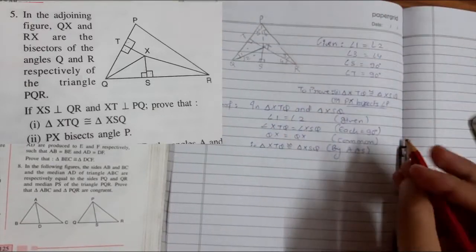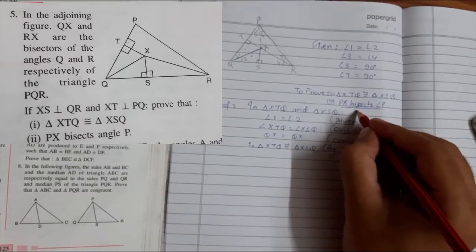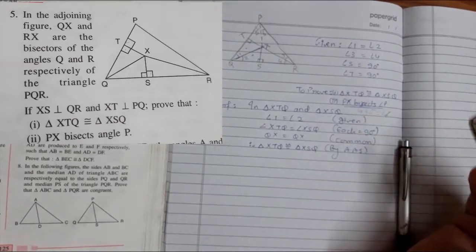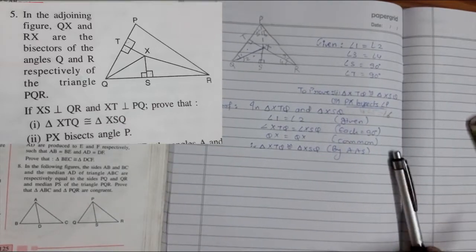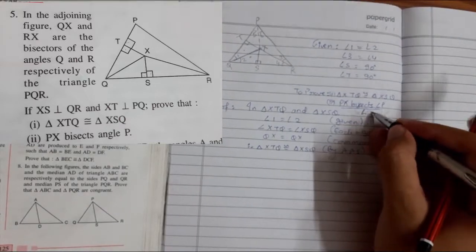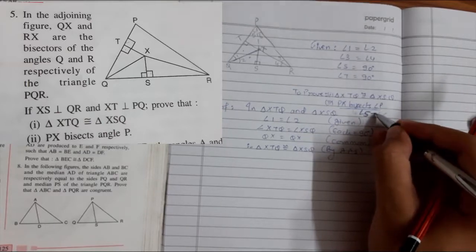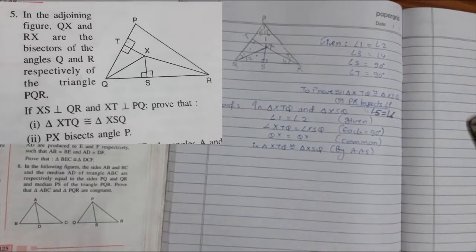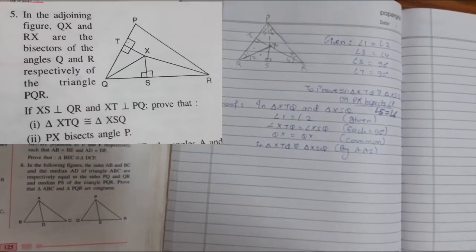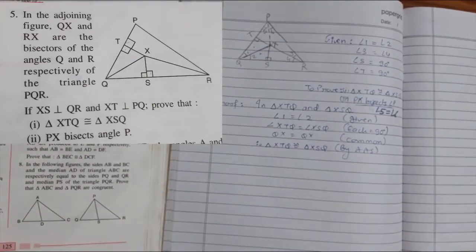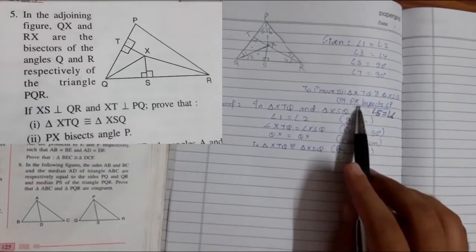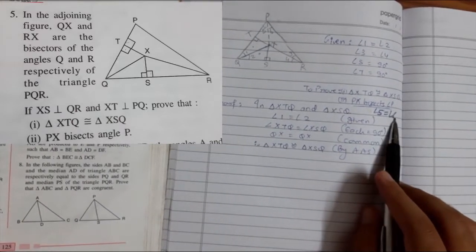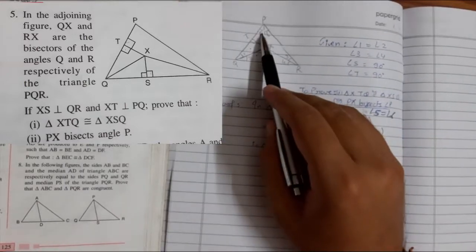So we can say angle 5, so we need to prove angle 5 is equal to angle 6. Angle 5 is equal to angle 6. We need to prove this thing. So in the next part we need to prove that PX bisects angle P, so 5 is equal to 6.